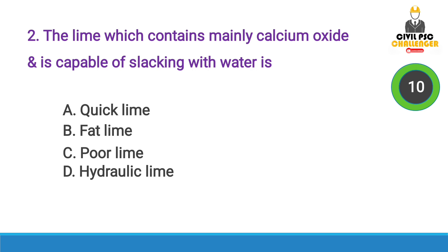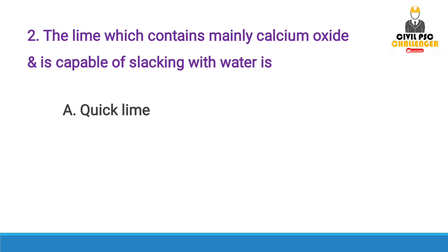Next question: The lime which contains mainly calcium oxide (CaO) and is capable of slaking with water is — Answer option A, Quick Lime (CaO).